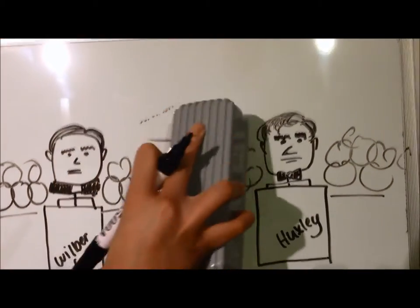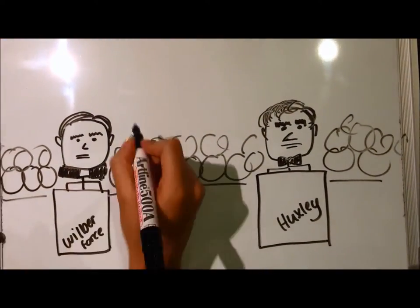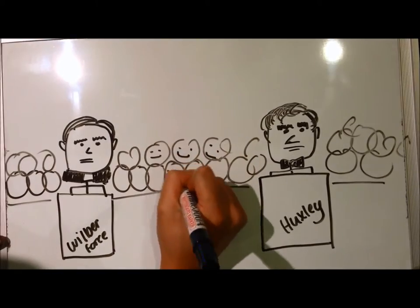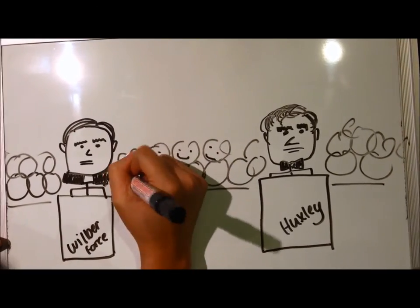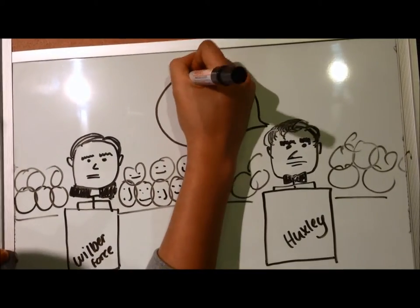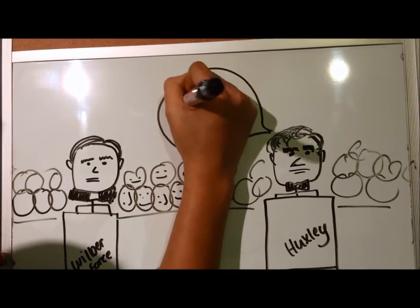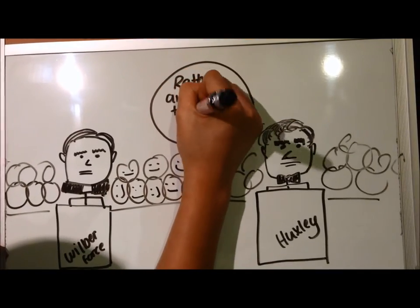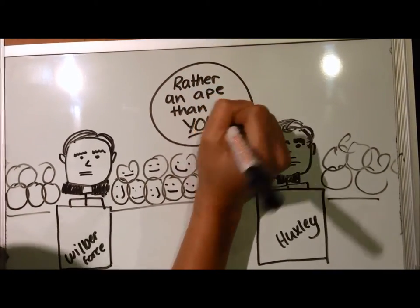Huxley refusing to be mocked rebuked that he would much rather have an ape ancestor rather than a bishop who distorted the truth. The crowd cheering for Huxley even more so than Wilberforce. It was at this point where Darwin's theory was finally earning the right to be heard.